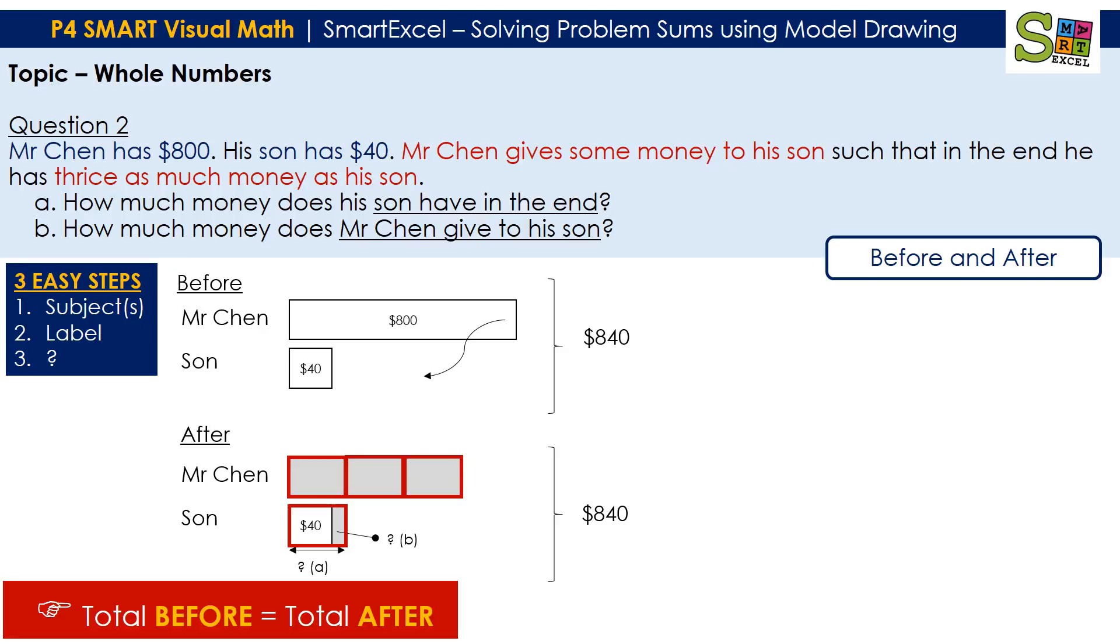So our first step is to find the total, which is $800 plus $40, which is $840.